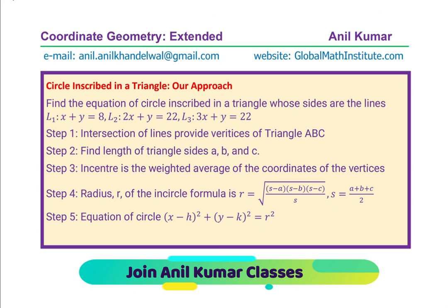So, as you can see here, let us get back to the strategy. The question was to find the equation of circle inscribed in the triangle whose sides are the lines L1, L2 and L3. So, step 1 is find the intersection of lines provided, provide vertices of the triangle ABC, right? That is our step number 1.